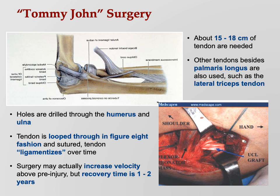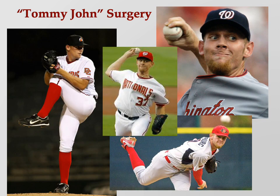For example, Steven Strasburg of the Washington Nationals was throwing fastballs over 100 mph when he first came up, but within a couple of years he tore his UCL and got dead arm. He underwent Tommy John surgery, was out of baseball for about a year, and came back to be a top-notch pitcher again. So that covers boutonniere deformity and Tommy John surgery — a couple of disorders and injuries of joints. Next we move on to muscles.